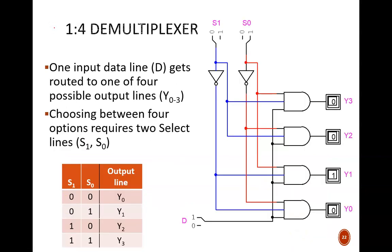This next schematic is for a 1 to 4 DMUX. One input data signal is routed to one of four possible output lines. In order to choose between four unique options, two select signals are necessary. A useful strategy is to name the output lines with a decimal number taken from the binary select code. Notice, for example, how setting the select inputs to 1 and 0 chooses output line number 2.